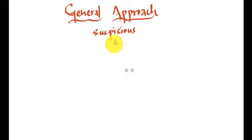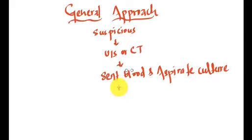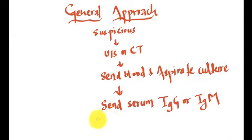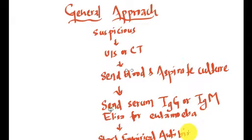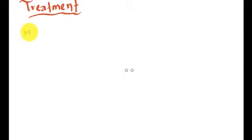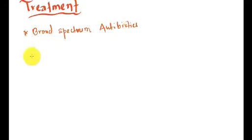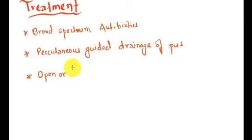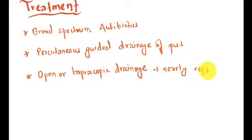Talking about the approach to pyogenic liver abscess: if we suspect it, the first thing is to perform ultrasound or CT scan. The second step is to send blood and sputum for culture. The third step is to send serum IgG or IgM ELISA for Entamoeba histolytica test. The last step is to start empirical antibiotics. The three treatment modalities are: broad spectrum antibiotics, percutaneous guided drainage of pus, and open or laparoscopic drainage, which is nearly replaced these days by percutaneous drainage.